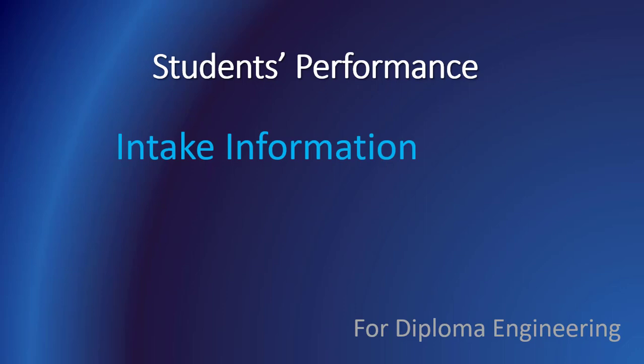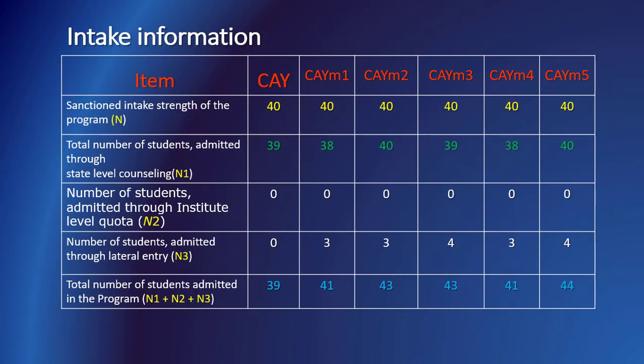Students' performance under criterion 4 starts with information about intake of students. Under this criterion, the program information related to intake has to be given for a total of 6 academic sessions including the current academic year. Intake capacity and enrollment records have to be tabulated in the format specified by SAR guidelines. The program information related to students' enrollment needs to be tabulated as per approved seat capacity and also for actual enrollment including the lateral entry students.